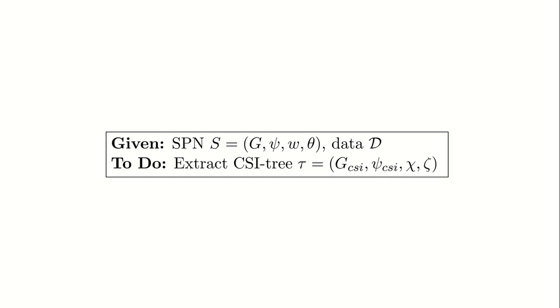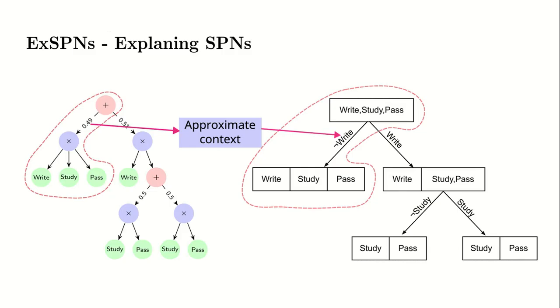This allows us to formalize our problem as follows. Given an SPN S and a dataset D, we need to extract a CSI tree tau.